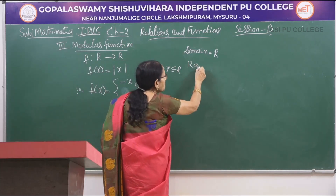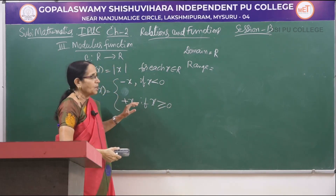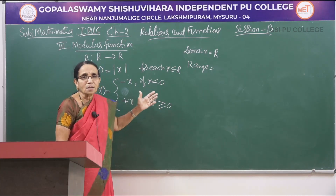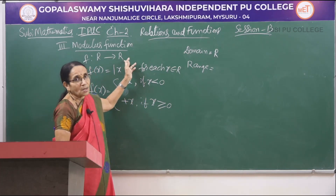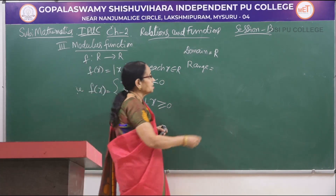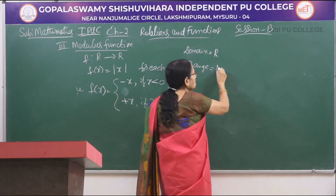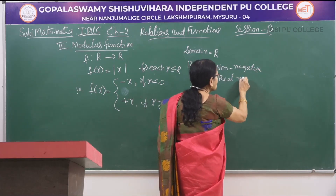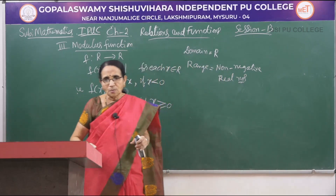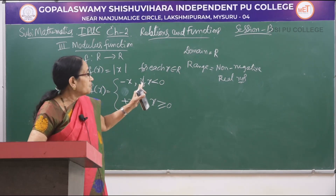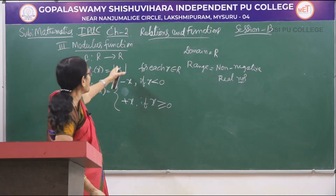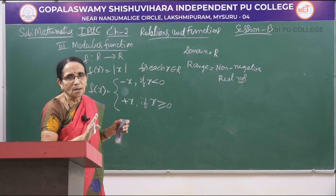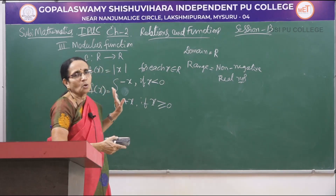Now what can be the domain and the range? For each x belonging to R, x can take any value — positive or negative — and even if x is negative the image will be a positive number. Therefore the domain of this function is R, the set of real numbers. The range is the set of non-negative real numbers, since the image will always be either 0 or greater than 0, so the range is a subset of the co-domain R.